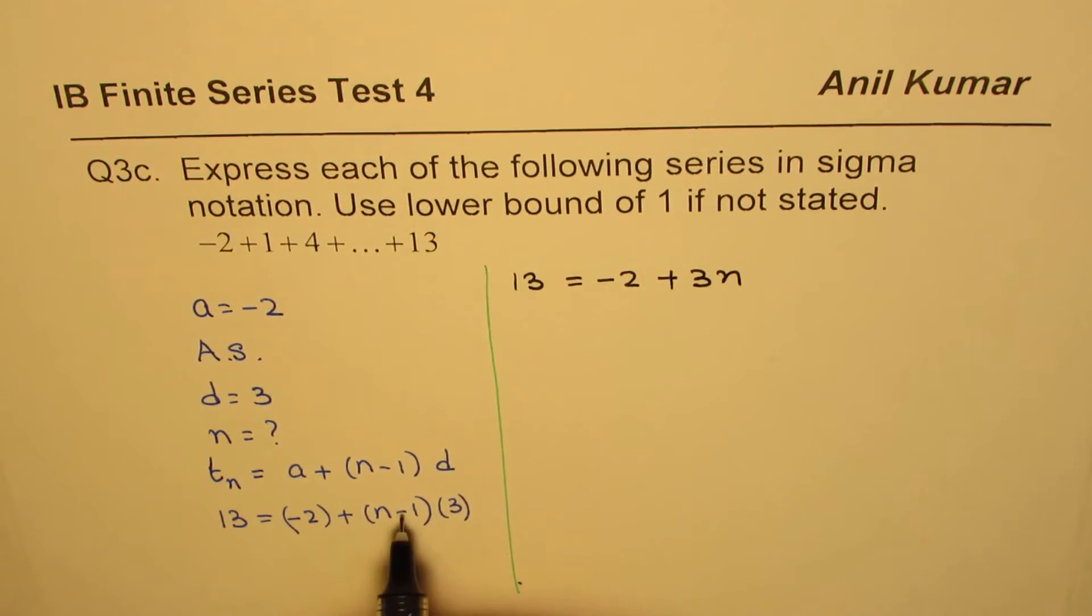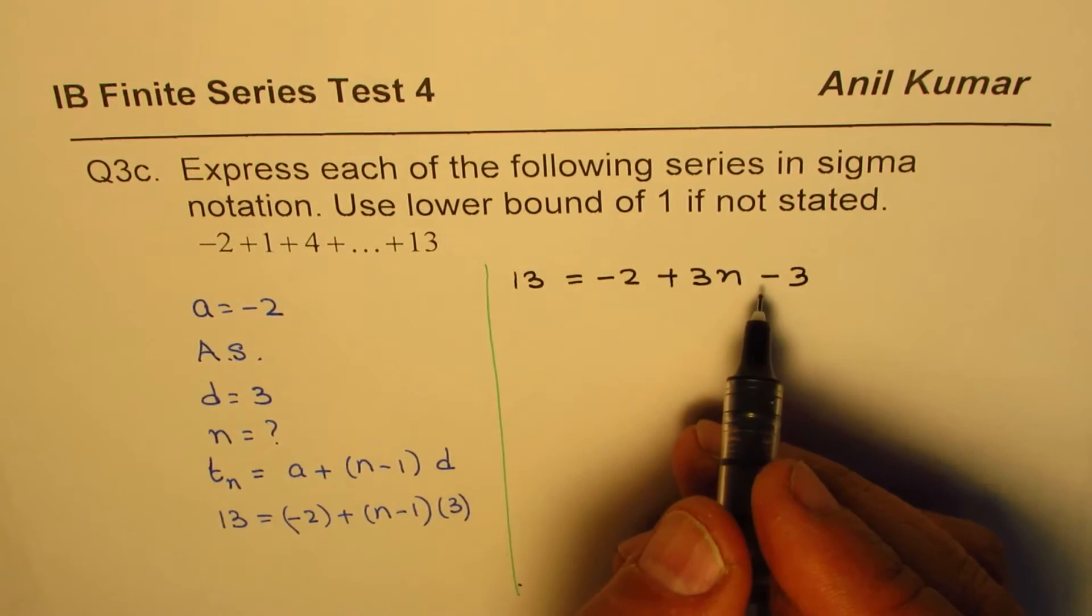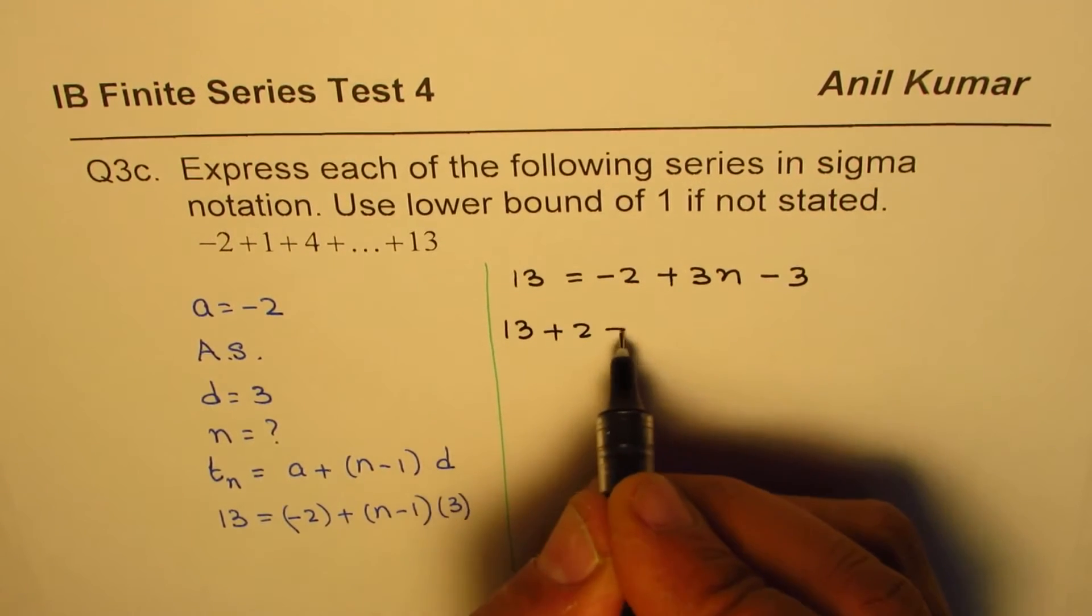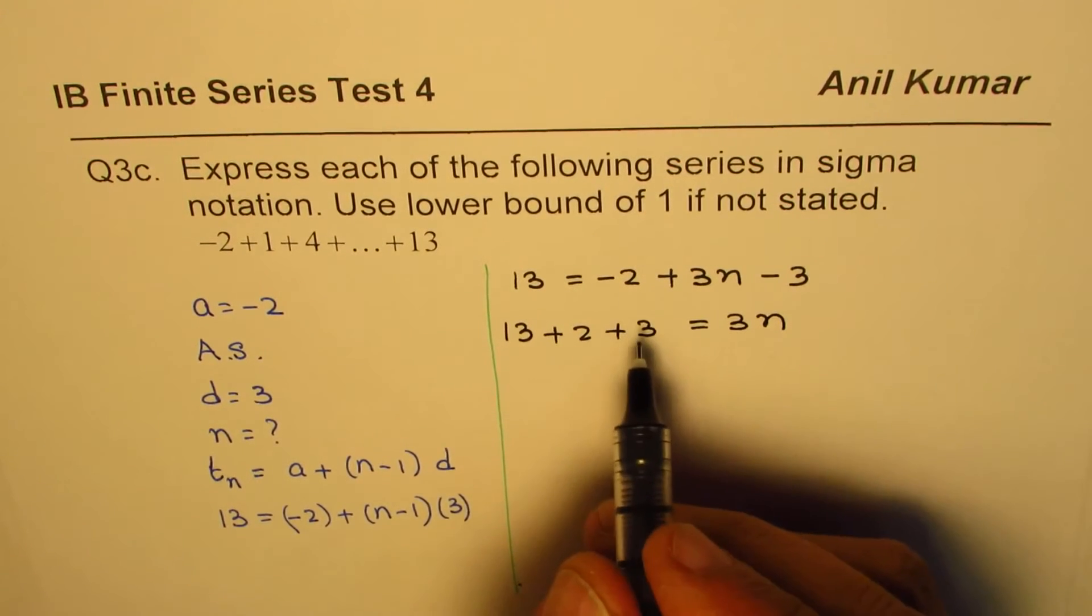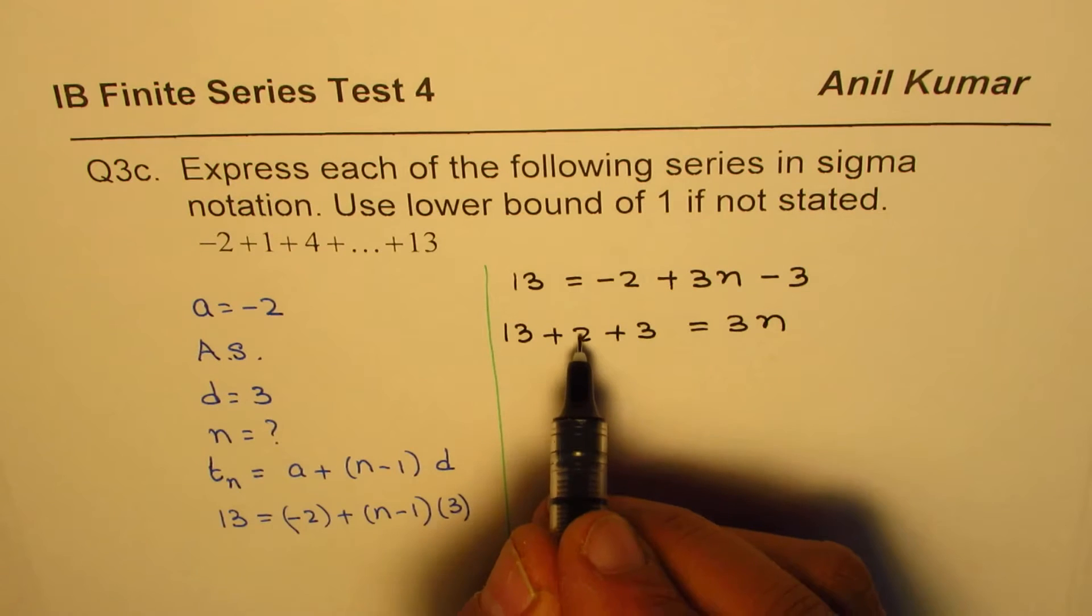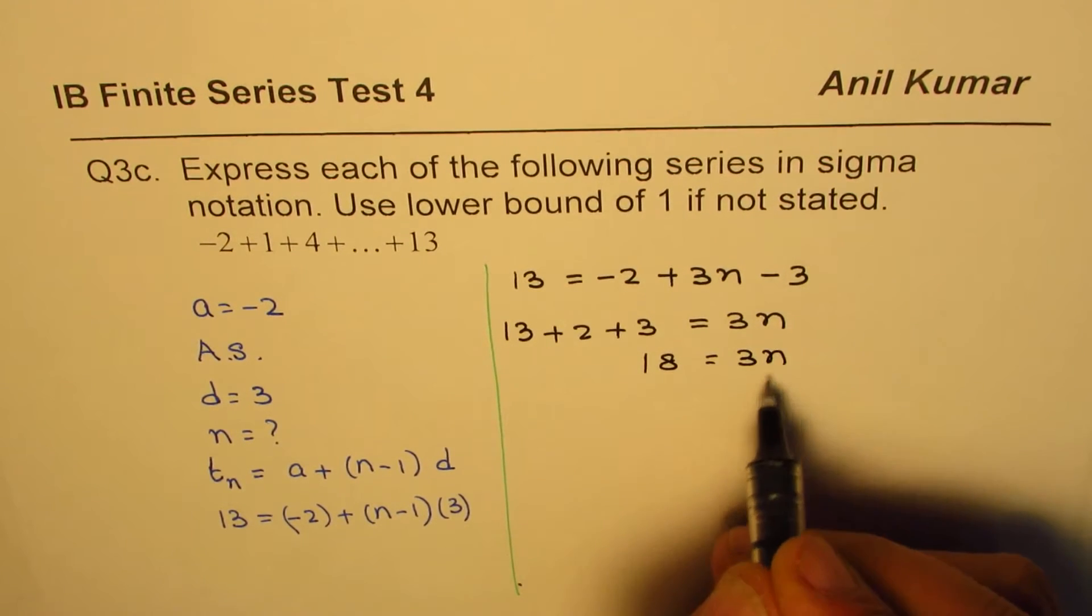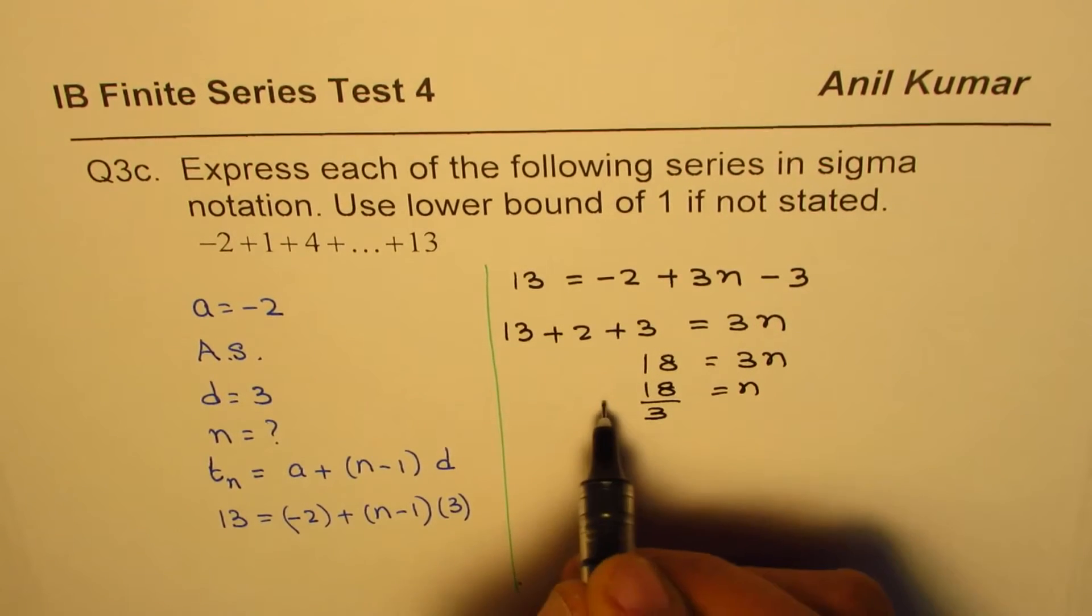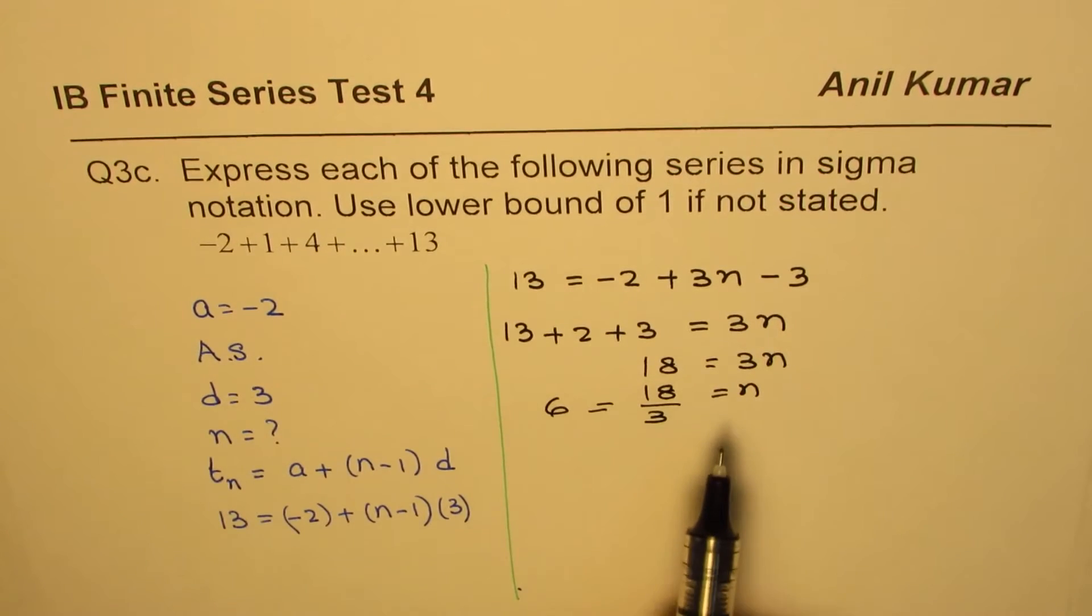And 3 times -1 is -3. Bringing these two terms to the left side gives us 13 + 2 + 3 equals to 3n. That is 18 equals to 3n, or n equals to 18 divided by 3, which is 6.